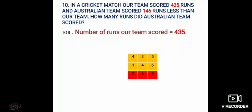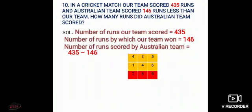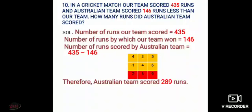Now how to frame the statements? First write down the number of runs our team scored, that is 435. Then write down the number of runs by which our team won, that is 146, because the Australian team scored 146 runs less. Then find out the number of runs scored by the Australian team by subtracting 146 from 435. The answer is 289, so the Australian team scored 289 runs. Always remember that statements should be short but complete in themselves.